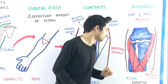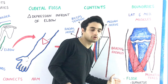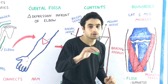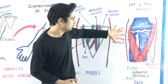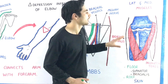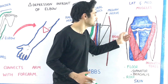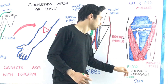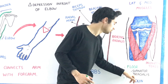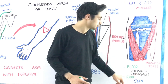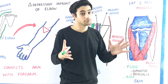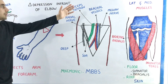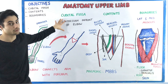The floor of the cubital fossa is formed by two muscles beneath the brachioradialis and pronator teres: the supinator and the brachialis. The roof is formed by the skin. This covers all the contents and boundaries of the cubital fossa.